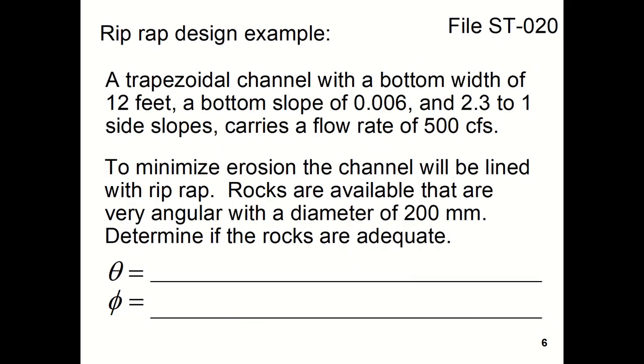We will start by doing an example. A trapezoidal channel with a bottom width of 12 feet, a bottom slope of 0.006, and 2.3 to 1 side slopes carries a flow rate of 500 cubic feet per second. To minimize erosion, the channel will be lined with riprap. Rocks are available that are very angular with a diameter of 200 millimeters. Determine if the rocks are adequate.